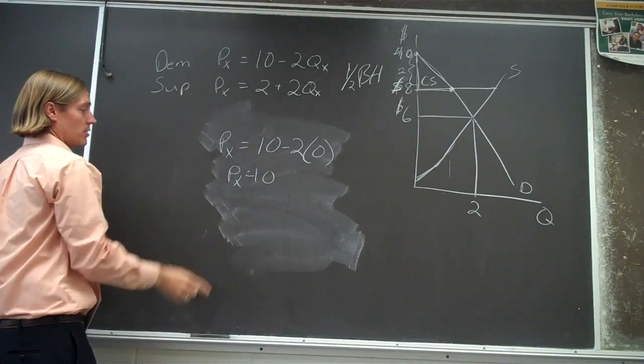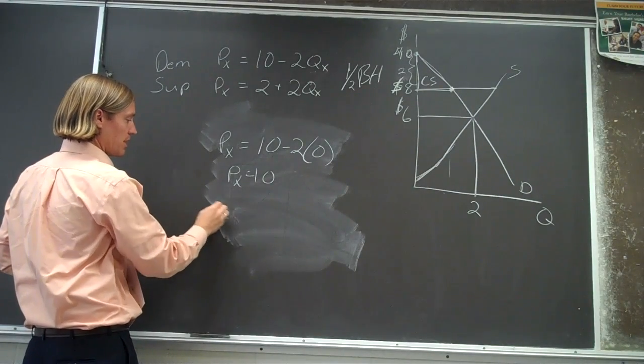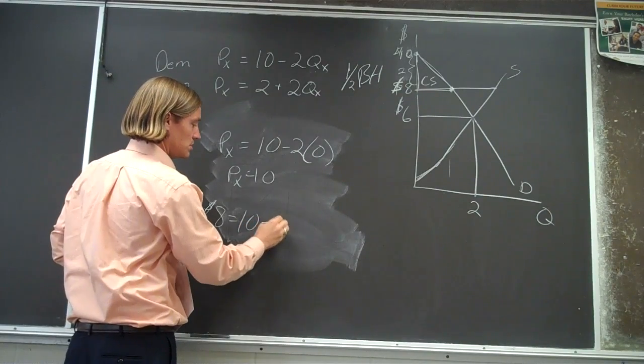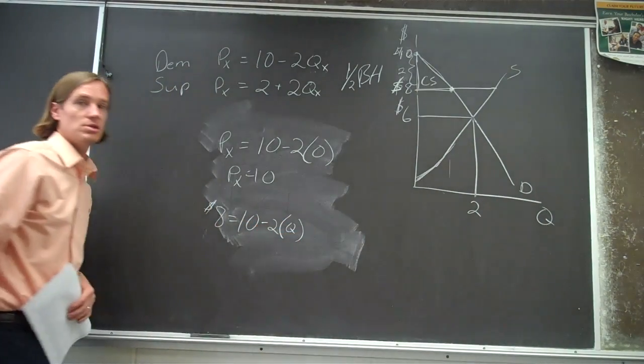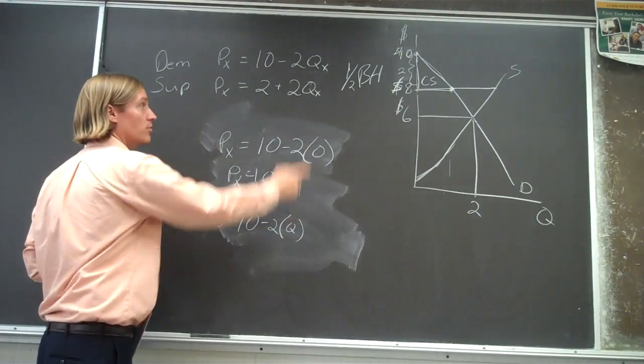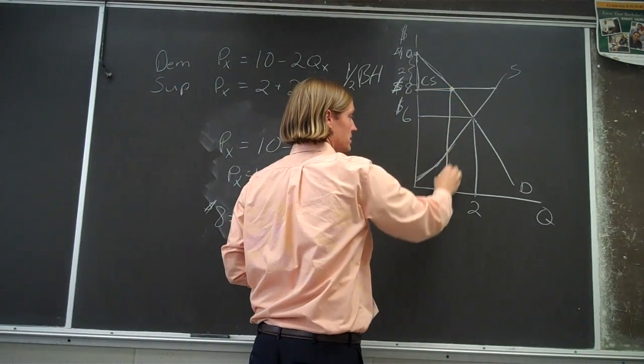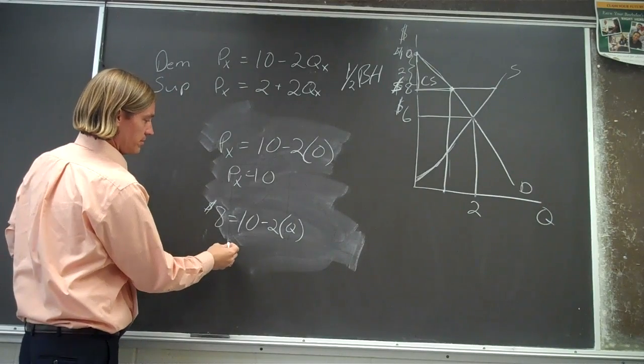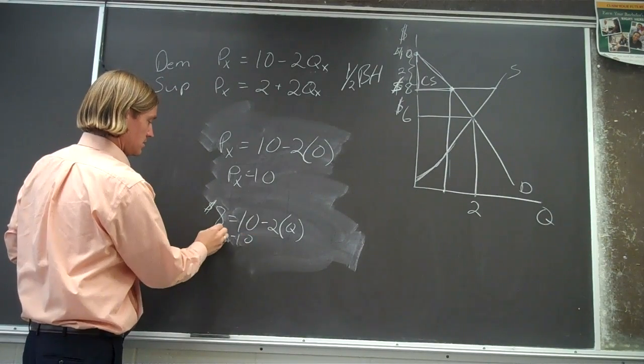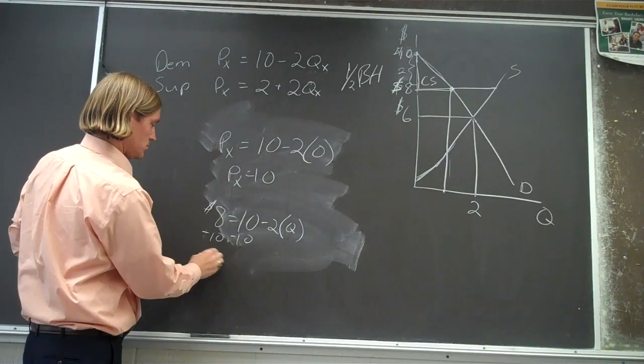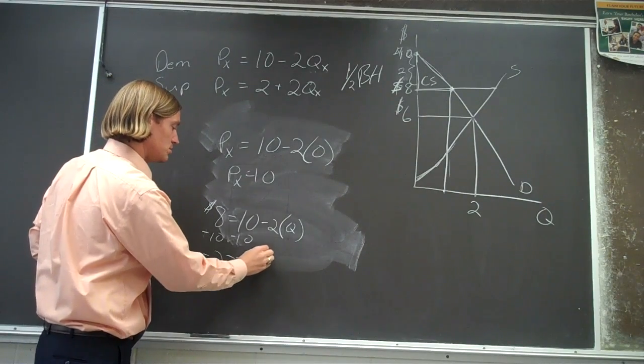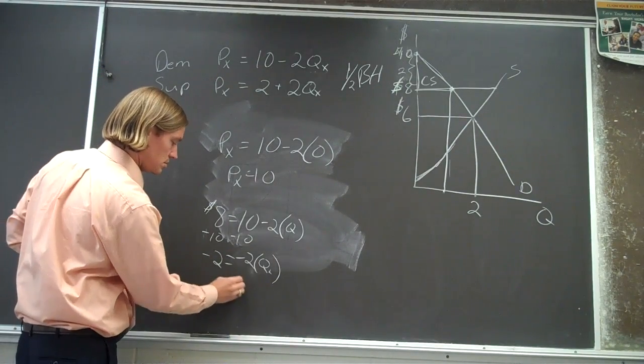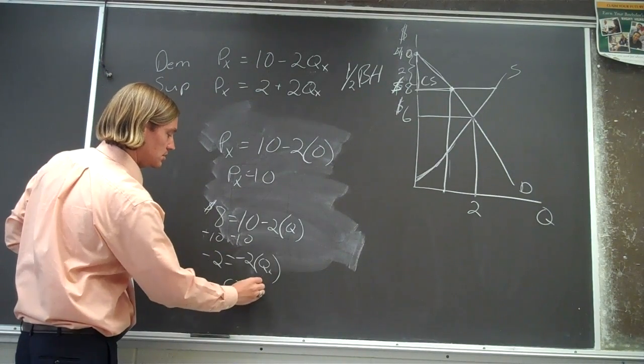So we can go back to our demand equation and say, if the price is 8 bucks, and our demand equation is 10 minus 2q, then we can solve for q. If we know it's 8, we can find this quantity. And so if we subtract 10, subtract 10, we should get minus 2 equal to minus 2q. And so our quantity is 1.